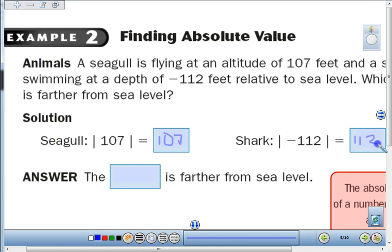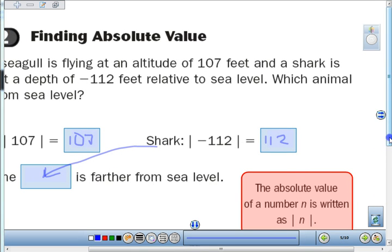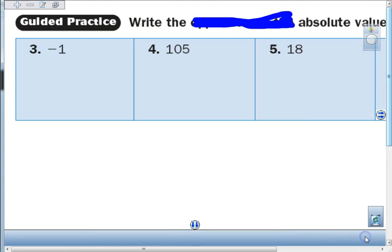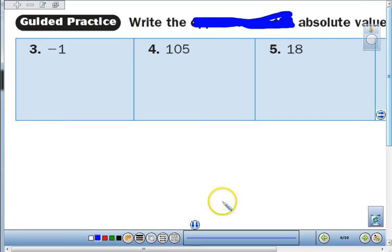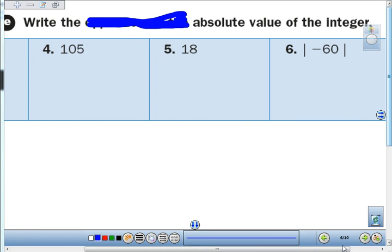The one that is farthest would actually be our shark. So the shark is the farthest from sea level. Remember, absolute value of a number is always going to be written this way. If you're asked to find the absolute value of negative 105, 18, and the absolute value of negative 60, when I see your notes tomorrow in class I should see this.